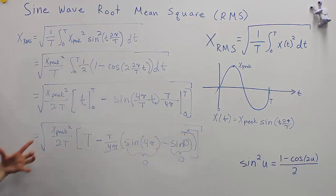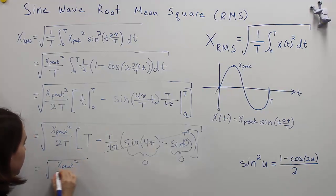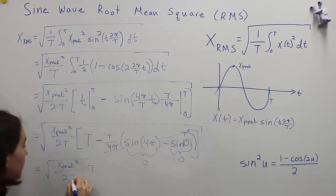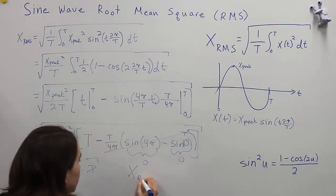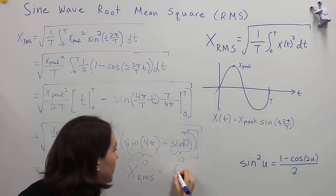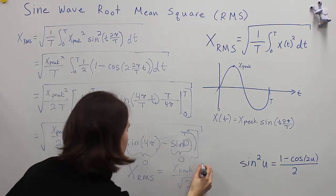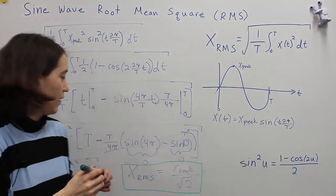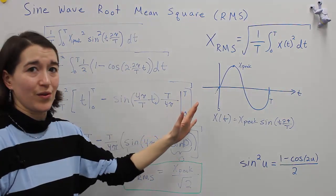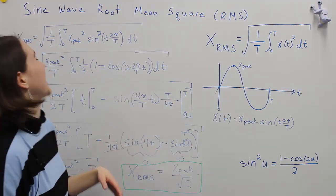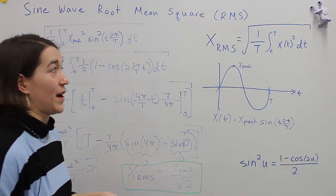We're just left with xpeak squared over 2T times T. These T's cancel, and taking the square root we get xRMS equal to xpeak divided by the square root of 2. This is the basic equation relating the RMS and peak value for a sine wave. Take your peak divided by root 2 and you'll get the RMS value.